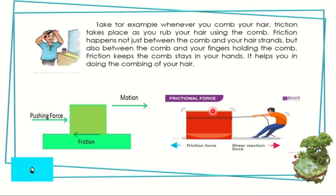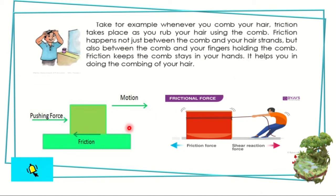Now let's move back to friction. Take for example whenever you comb your hair — friction takes place as you rub your hair using the comb. Friction happens not just between the comb and your hair strands, but also between the comb and your fingers holding the comb itself. Friction keeps the comb in your hands and helps you in combing your hair. Always remember: friction always opposes.